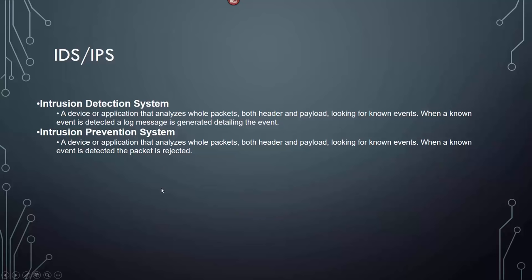IDS and IPS are almost synonymous now, but remember: an intrusion detection system detects — when a known event is detected, a log message is generated detailing the event. An intrusion prevention system looks at the whole packet — header and payload — and when a known event is detected, the packet is rejected. It prevents rather than just detects. You'll also need to know about whether events are always known or if they've never been seen.